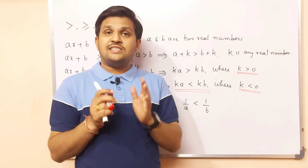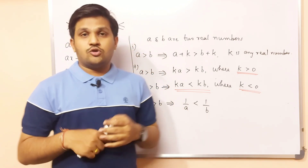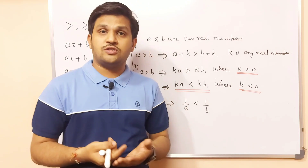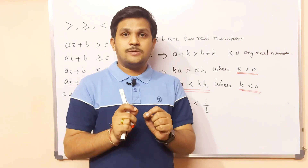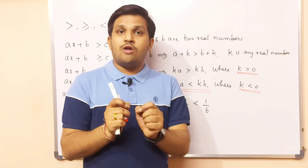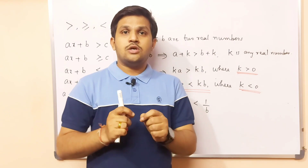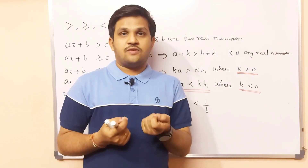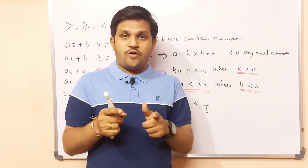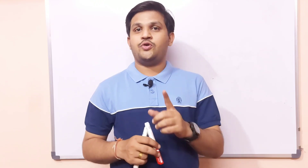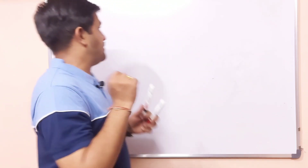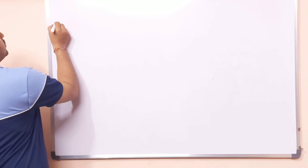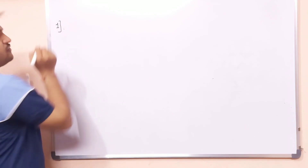Next, we will consider the absolute value of a real number — what we call the mod function. For mod functions, how to solve them is very important for KCET. You need to understand how to solve modulus functions and find where the solution set exists. Let us see the results related to the absolute value of a real number. These remarks are very important.